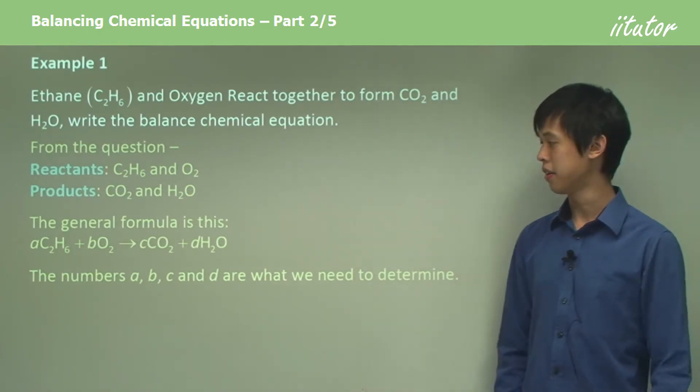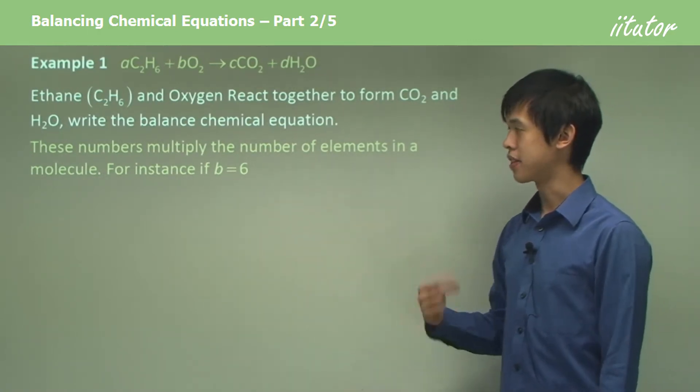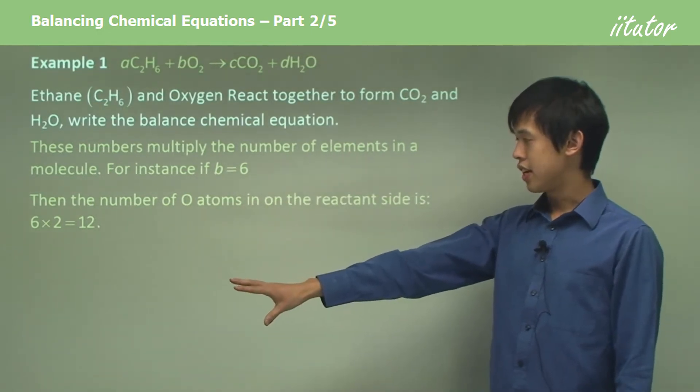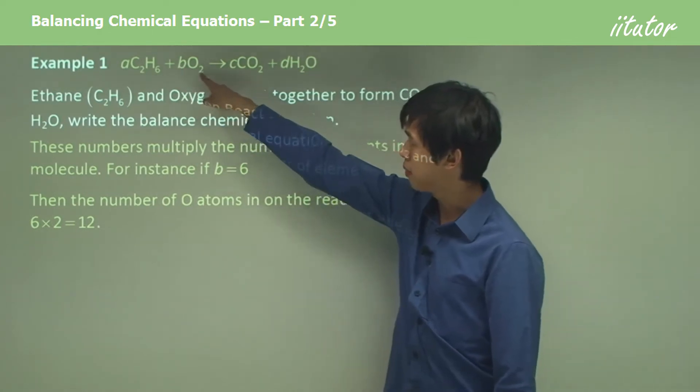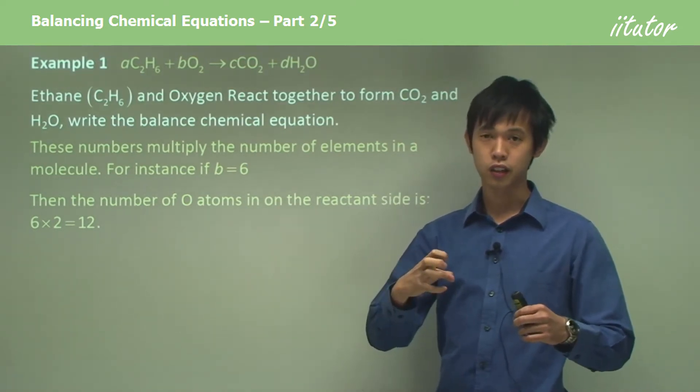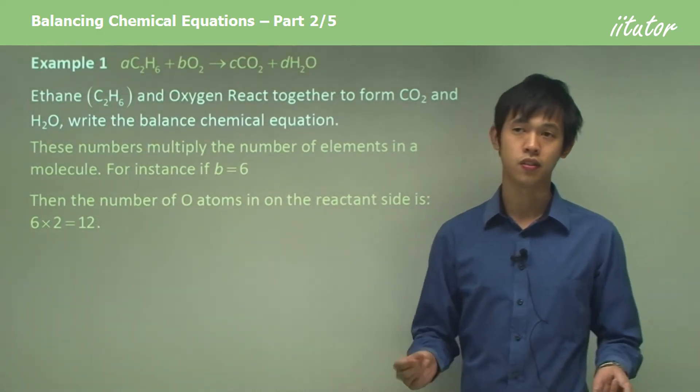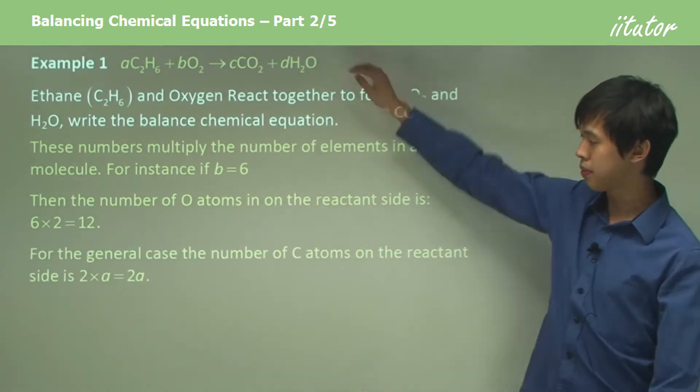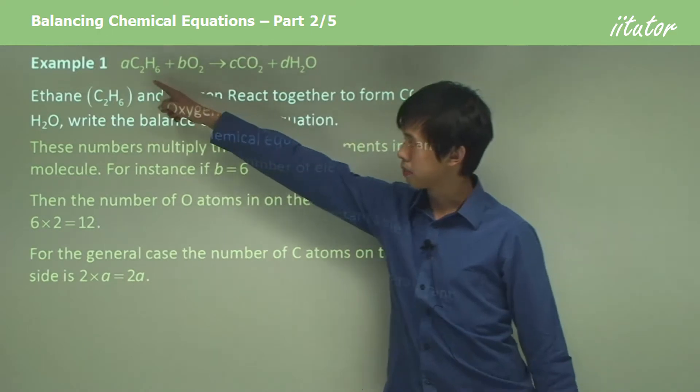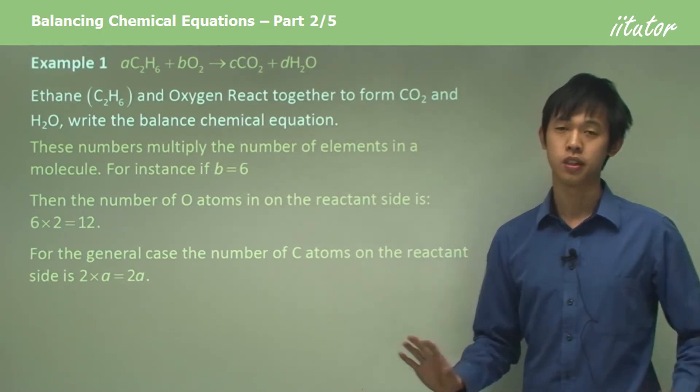These numbers A, B, C and D multiply by the number of elements in a molecule. For instance if B is six, then the number of oxygen atoms on the reactant side is 6 times 2 which gives you 12. If you've got six O2 molecules and two oxygen atoms per O2 molecule, then you've just got 6 times 2 oxygen atoms which means you've got 12. In the general case, the number of C atoms on the reactant side is 2 times A, which is the same as 2A. This is just very basic algebra. That's all we have to deal with here.